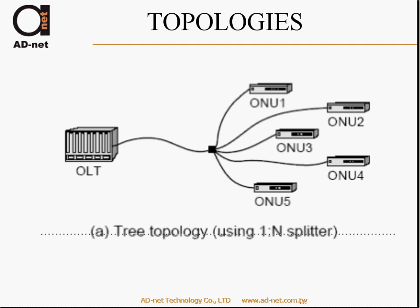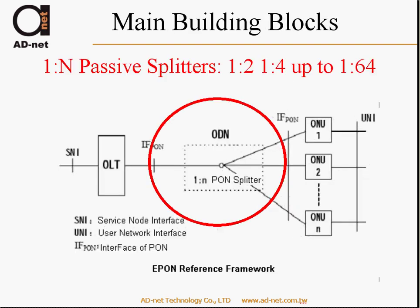What can you build with such a topology? You are totally free, not limited — only your imagination is the limit. First, you can make a tree topology. As you can see, it uses a 1-to-N splitter. You have one fiber coming from the OLT's passive optical network port up to the ONU. Here you can see an example of 5 ONUs, but as discussed before, you can have splitters from 1-to-2, 1-to-4, up to 1-to-64.